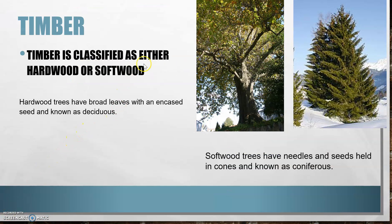As a recap from last week, timber is in two categories: hardwood or softwood. Not necessarily hardwood is hard and softwood is soft — balsa wood is one of the softest timbers but it's a hardwood. Hardwoods have leaves on the trees; they're deciduous, so the leaves fall down often in autumn and winter. Think of a horse chestnut — a conker. That's the tree seed and it's encased.